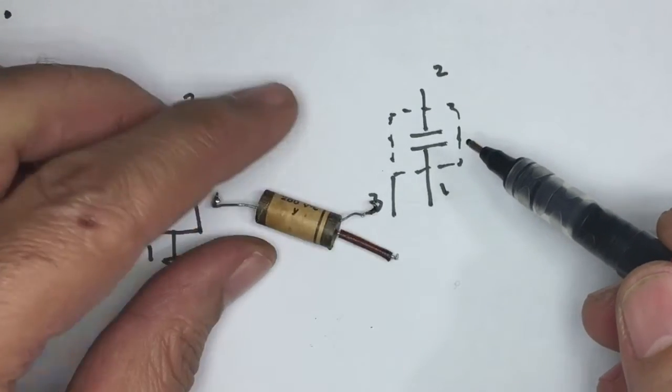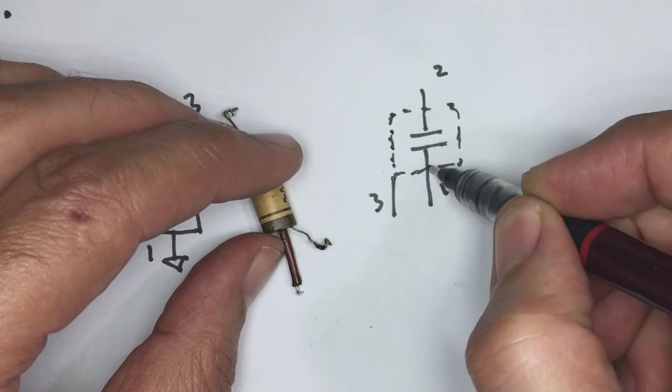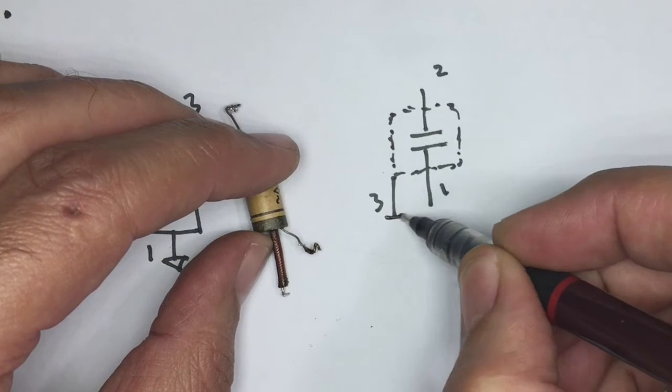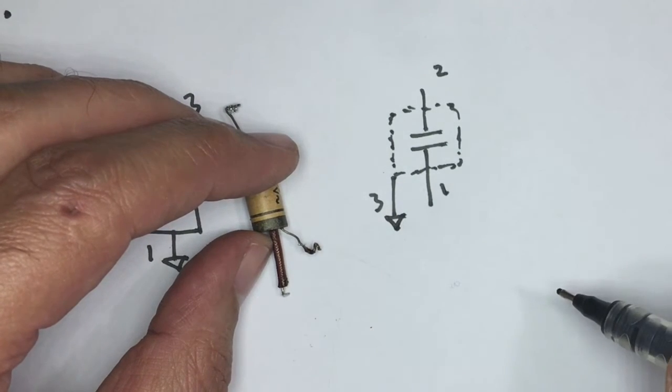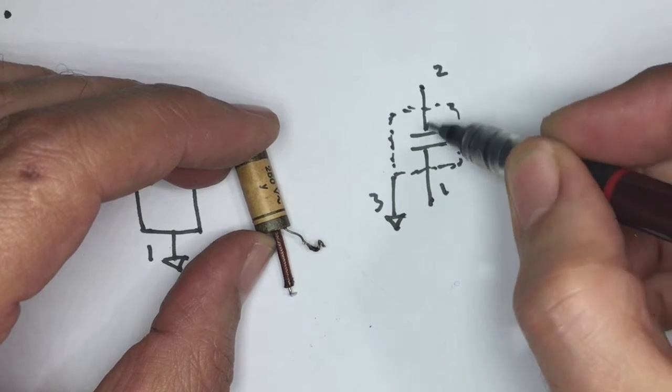This thing here is exactly how they draw this. They draw the capacitor and they draw a dashed line across here around it. And usually this thing then goes to ground. And usually also neither of these goes to ground.